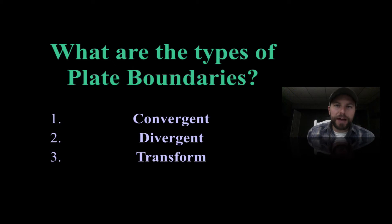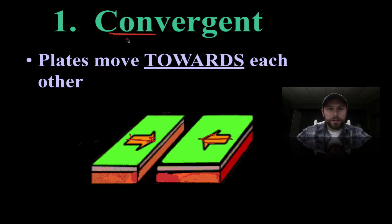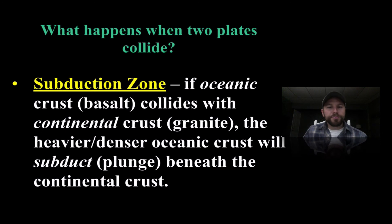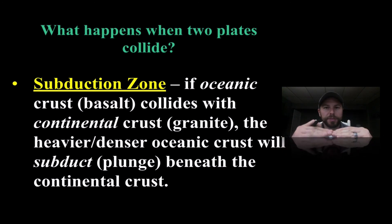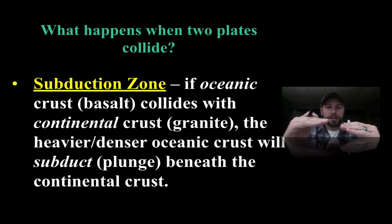There are three types of plate boundaries since these plates move, and we're going to go into the first one — convergent plate boundaries — in this screencast. Convergent plate boundaries are simply when plates move towards each other. This diagram shows them moving together with arrows coming in. 'Convergent' is going to mean 'with' — so they're moving toward each other. At a convergent plate boundary we can have a number of different things happen depending on whether we have oceanic or continental crust.